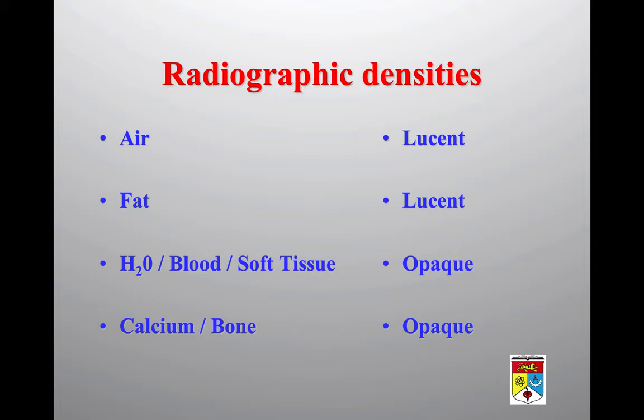When approaching a radiograph, you need to know the basic radiographic densities, because they represent certain structures. This applies not just in the chest but across all radiographs in the body. Things that appear black represent air or fat. Opacity — appearing white — can represent fluid, blood, soft tissue, or if more opaque, calcium or bone.